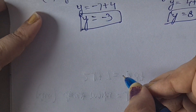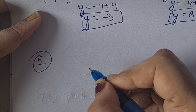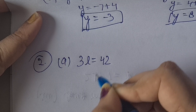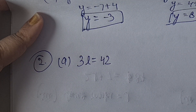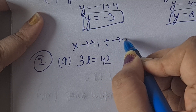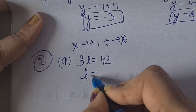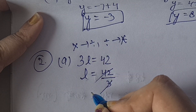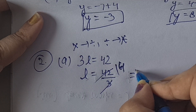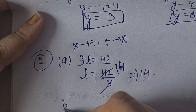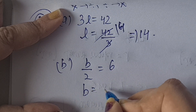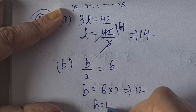Similarly, parts g and h can be done the same way. Now Question 2: give first the step you will use to separate the variable, then solve. A: 3L = 42. Here L is in multiplication with 3, so multiply converts to divide. L = 42 divided by 3 = 14. B part: B upon 2 = 6. Division converts to multiplication, so B = 6 into 2 = 12.